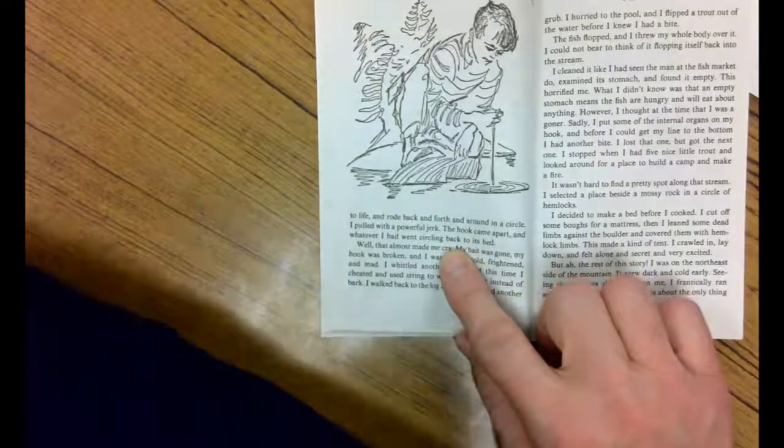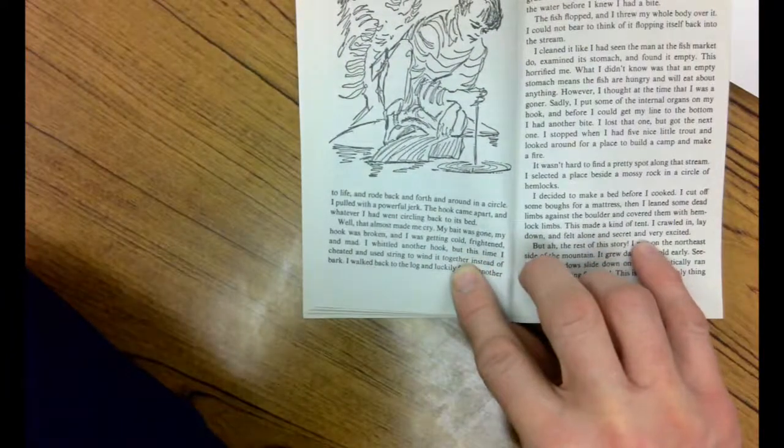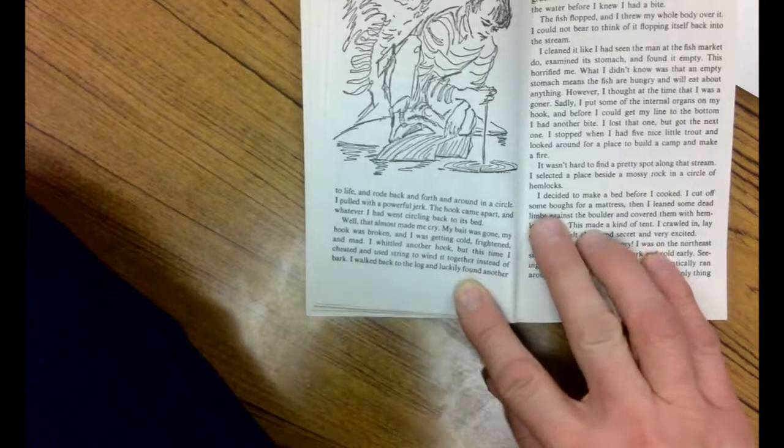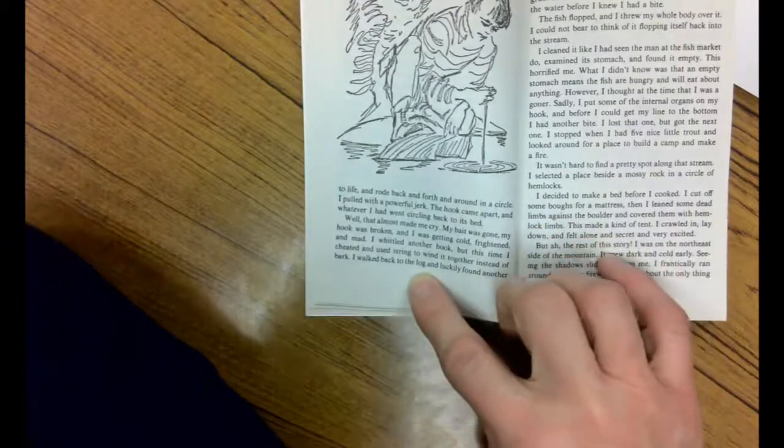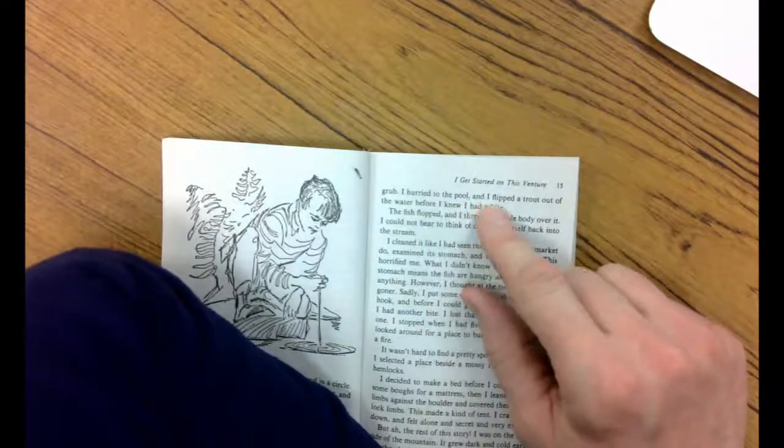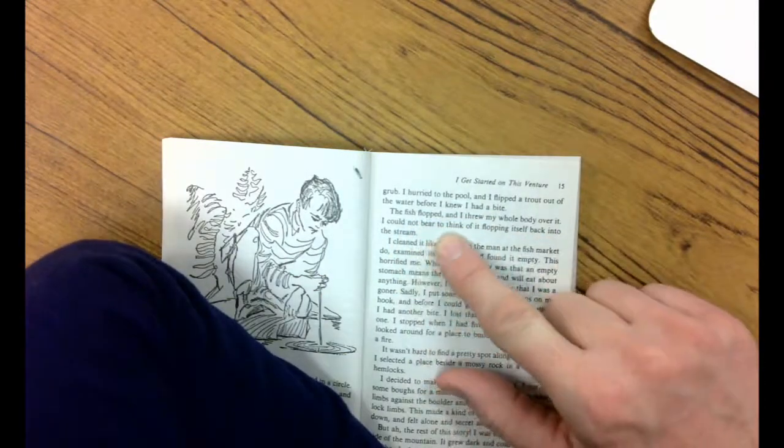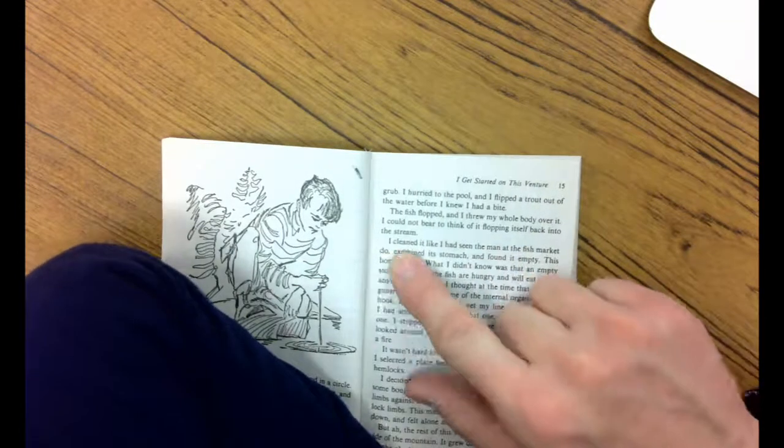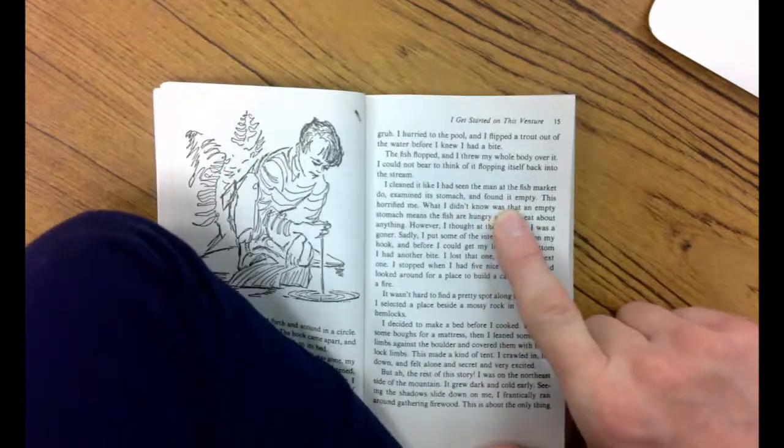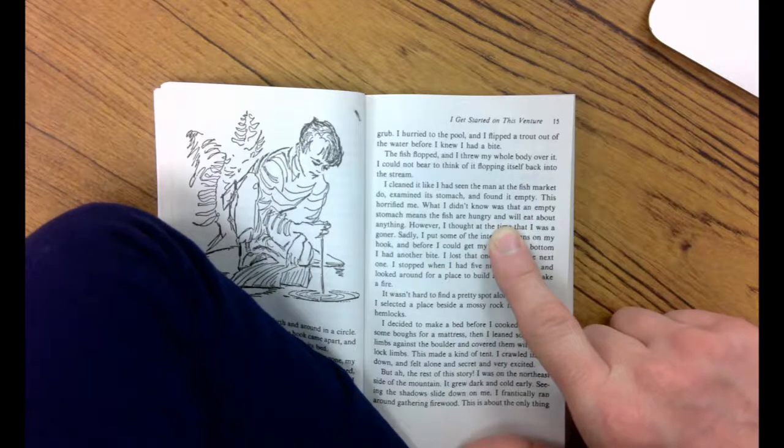Well, that almost made me cry. My bait was gone, my hook was broke, and I was getting cold, frightened, and mad. I whittled another hook, but this time I cheated and used string to wind it together instead of bark. I walked back to the log and luckily found another grub. I hurried to the pool and I flipped a trout out of the water before I even knew I had a bite. The fish flopped and I threw my whole body over it. I could not bear to think of it flopping itself back into the stream. I cleaned it like I had seen the man at the fish market do, examined its stomach, and found it empty. This horrified me.